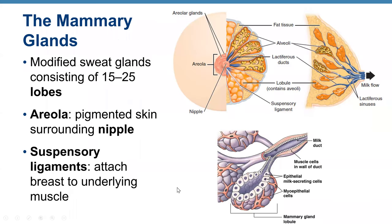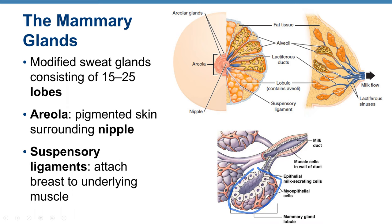To summarize the breast structure: each lobule contains alveoli whose cells produce milk. Milk flows from the alveoli through lactiferous ducts into lactiferous sinuses and opens inside the nipple.